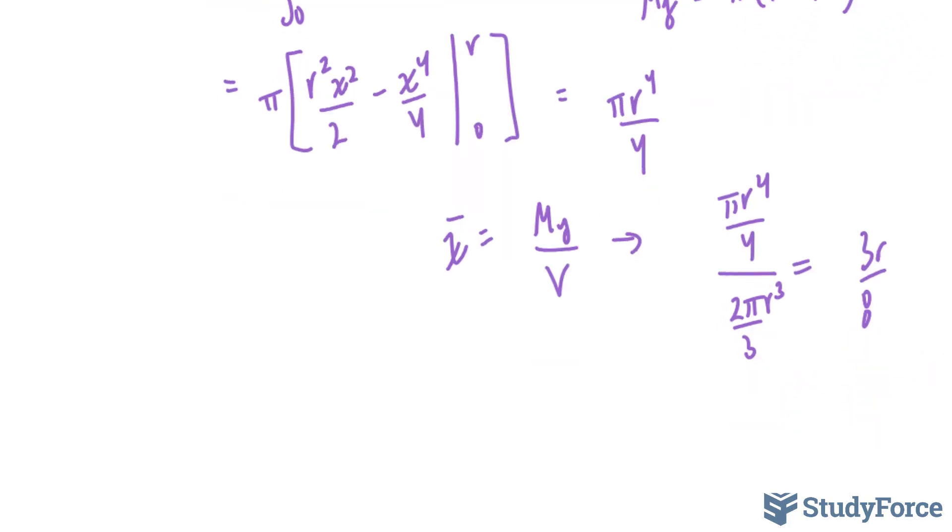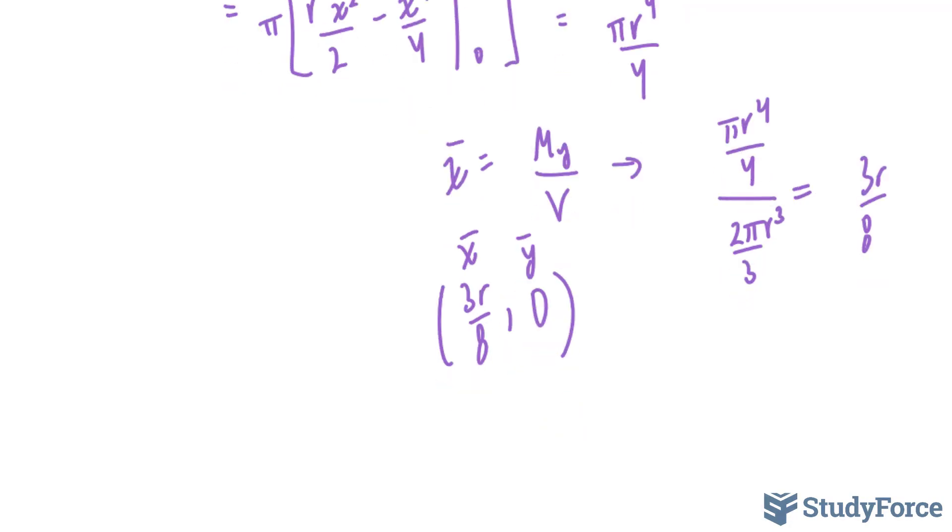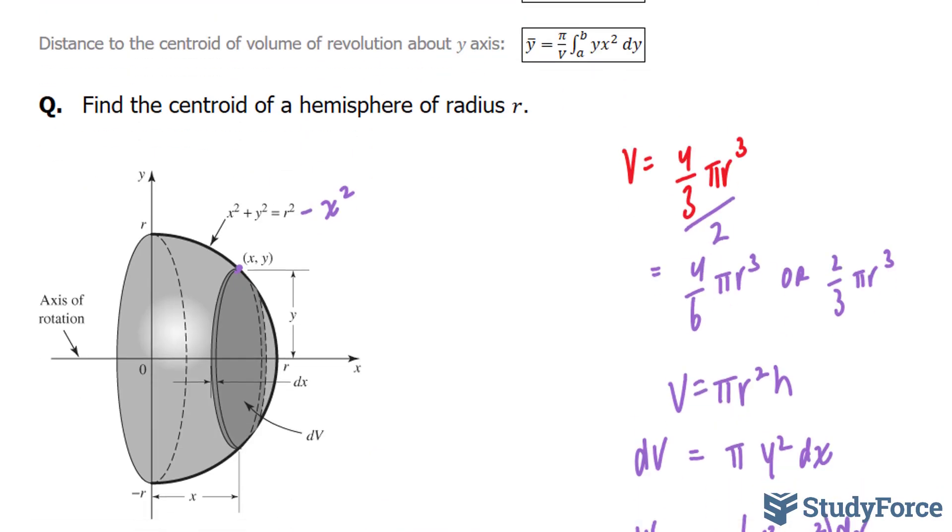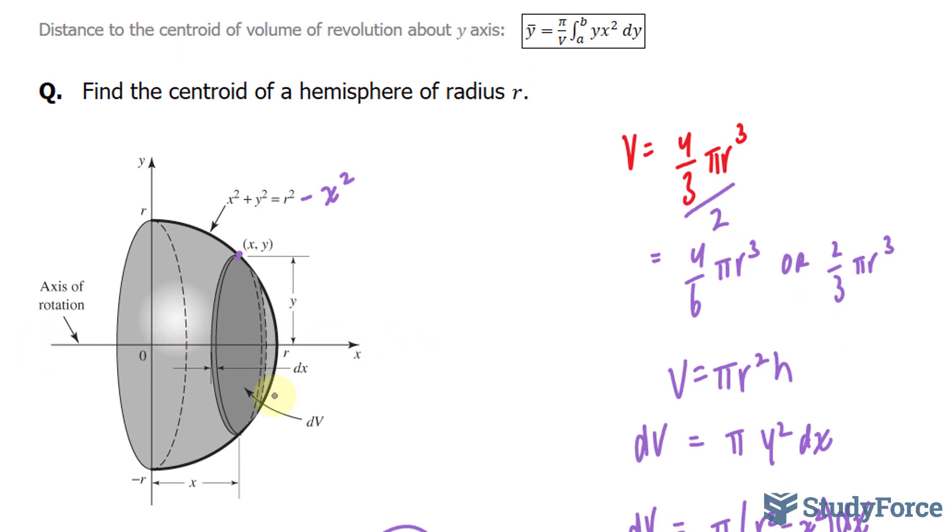This means that the centroid of this hemisphere of unknown radius will always have the format, 3 r over 8, that's your x bar, and 0. And the reason why this is 0 is because the hemisphere that we generated was symmetrical along the x-axis.